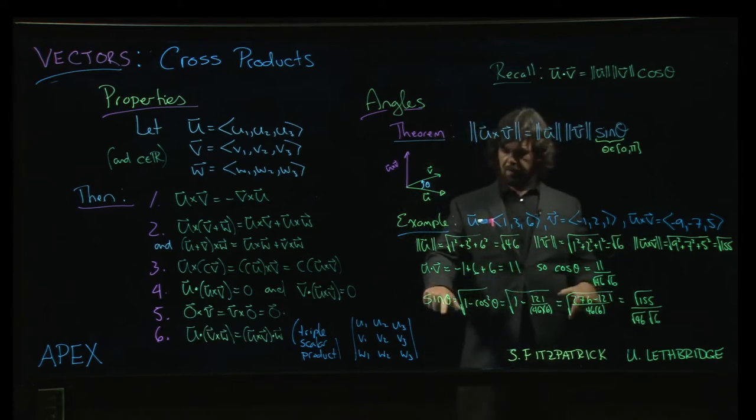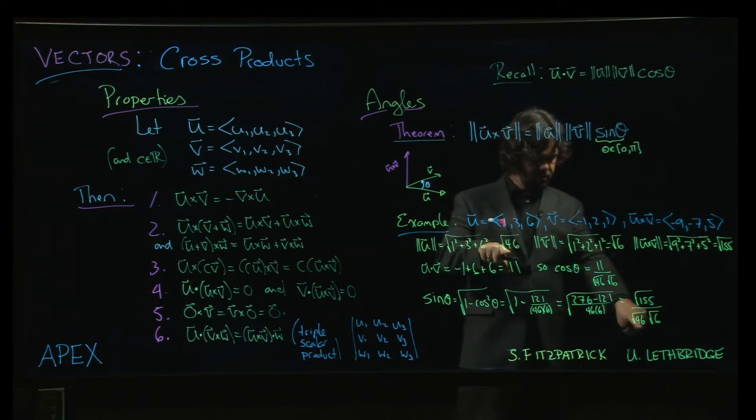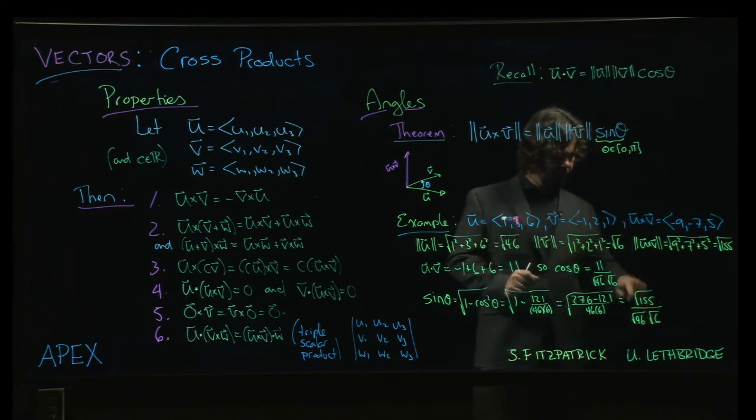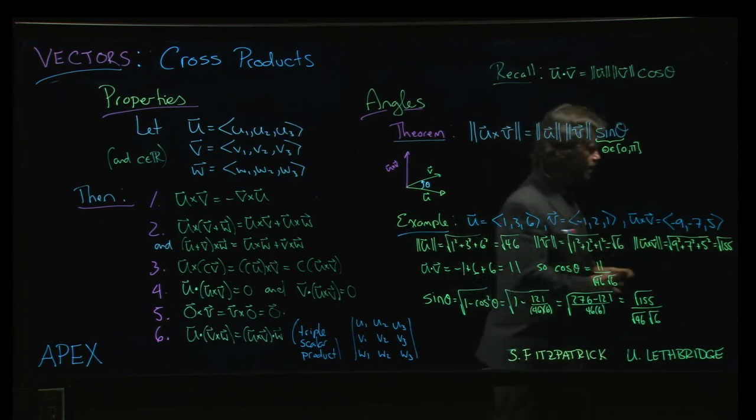Now, if I multiply by magnitude of u and magnitude of v, well, those are going to cancel. Those are going to cancel. I'm going to be left with the square root of 155, which is exactly what I'm supposed to get. That's correct.